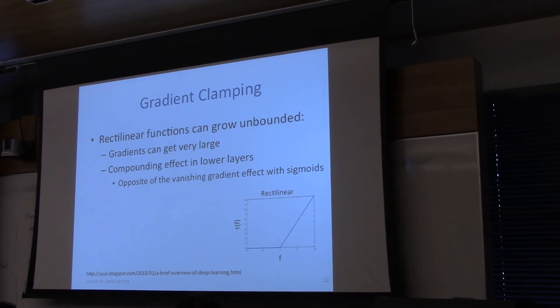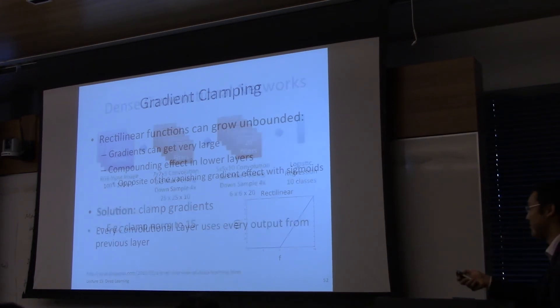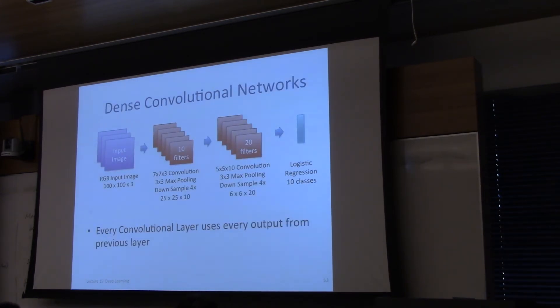Gradient clamping, rectilinear functions can grow unbounded, so the gradients can get very large. One simple thing that you can do is you can just clamp the gradients. So if the gradient has norm greater than 15, divide it, so that its norm is no more than 15. Don't ask any questions, please. It just works.